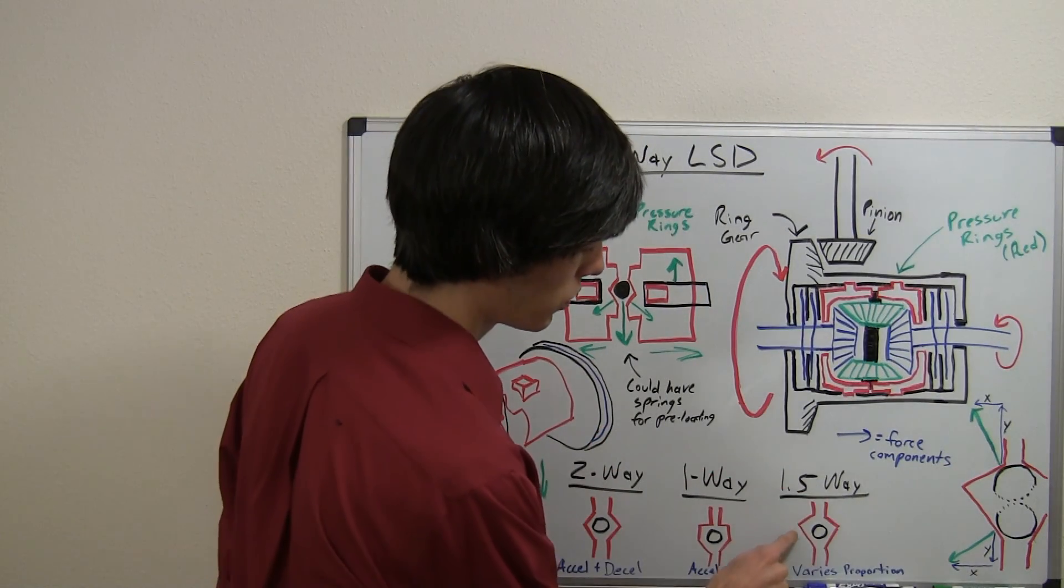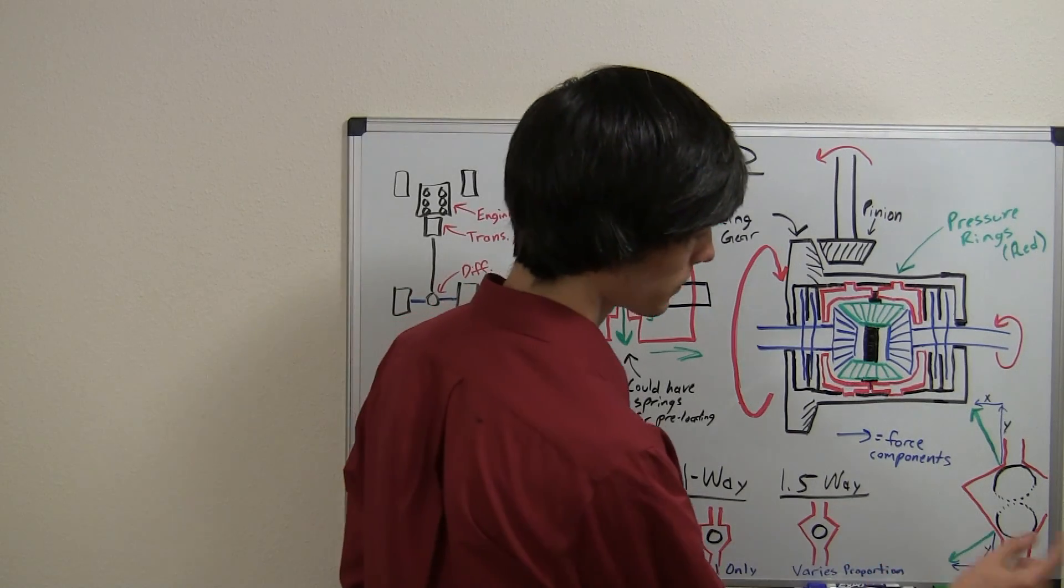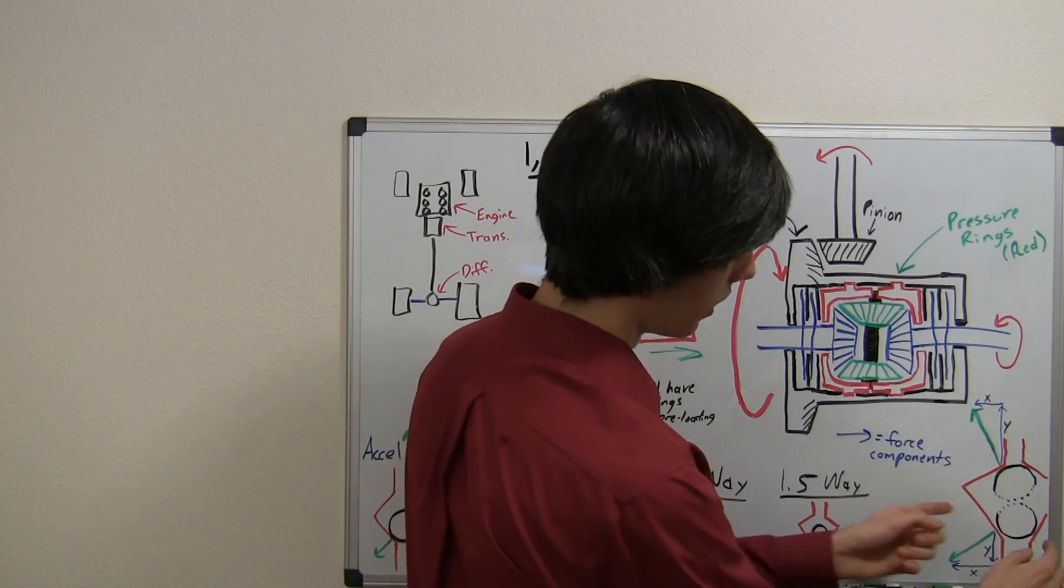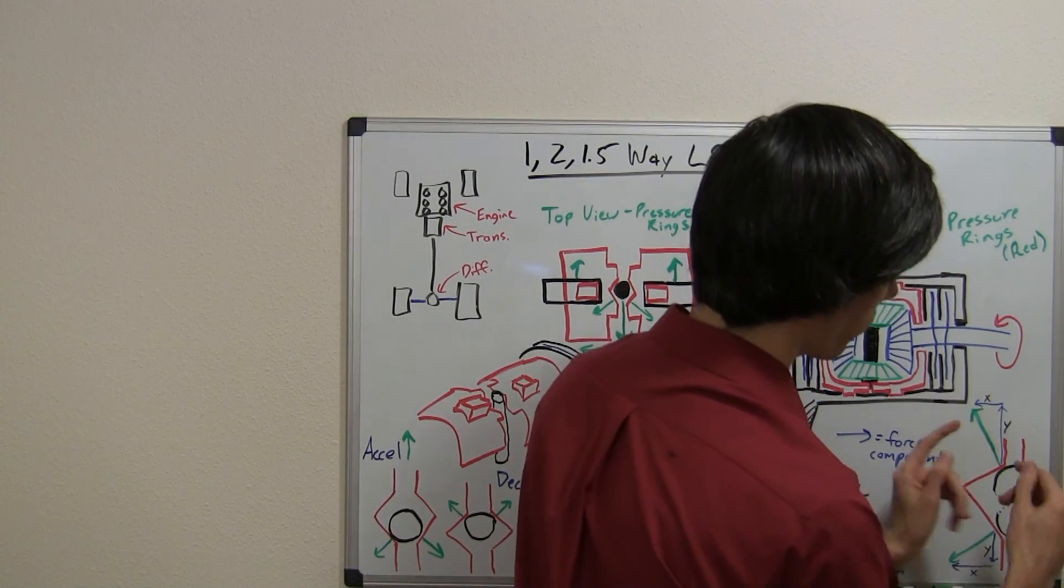So how does that work? Well, you just use differing angles in these pressure rings. So, let's say you're accelerating. Well, you've got this kind of more narrow angle here, and so that's going to create...